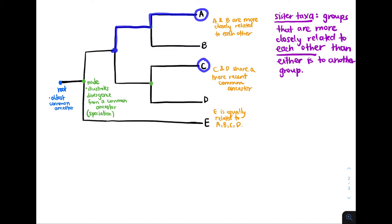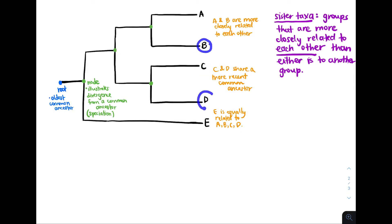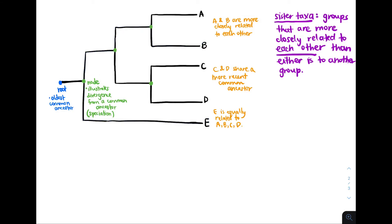Look at A and C — their most recent common ancestor goes farther back. Same with A and D. B and C have a recent common ancestor that's farther back as well, and B and E's recent common ancestor goes even farther back. So A and B are more closely related to each other because they share a more recent common ancestor than A did with C, D, or E, or than B shared with C, D, or E. In the same way, C and D are sister taxa because their most recent common ancestor is not shared by any other group on the tree.